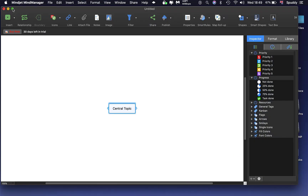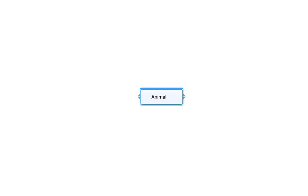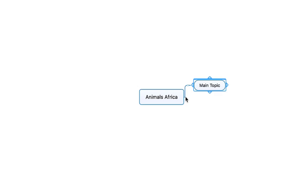I am going to maximize the window so you can see that clearly. Let's see if there are any changes. I am going to click in the middle and let's say you have got some research to do on a subject. I am doing this on the fly. Say we have got to do some research on 'Animals Africa'. Click on it and if you click the little plus button here, you can create your first branch and add a sub-branch.